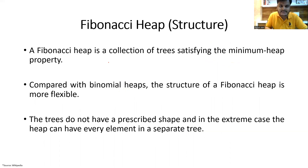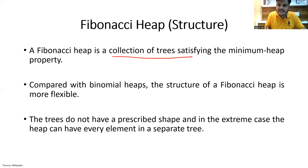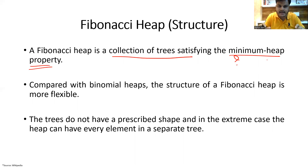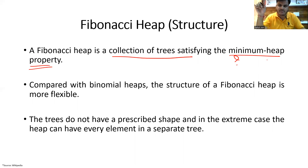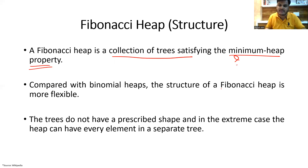Fibonacci heap is a collection of trees satisfying the minimum heap property. Minimum heap says that if you have a tree, the root node must be minimum among all its subtree nodes. Let's say N subnodes are there and we have a root node over them — that root must be minimum. That definition should be followed for each sub-root node as well, and that is called the minimum heap property.